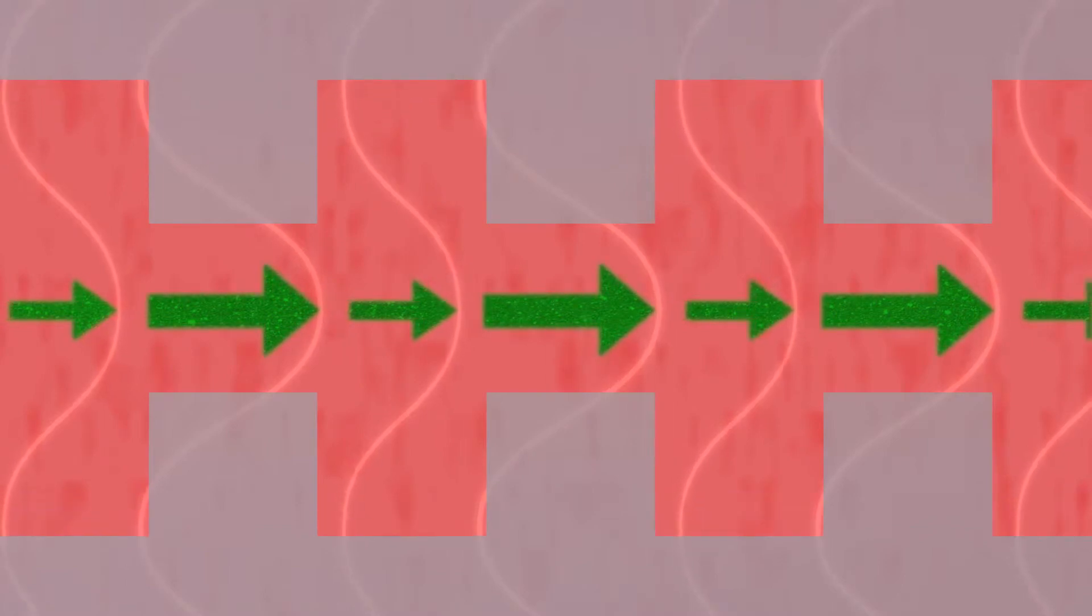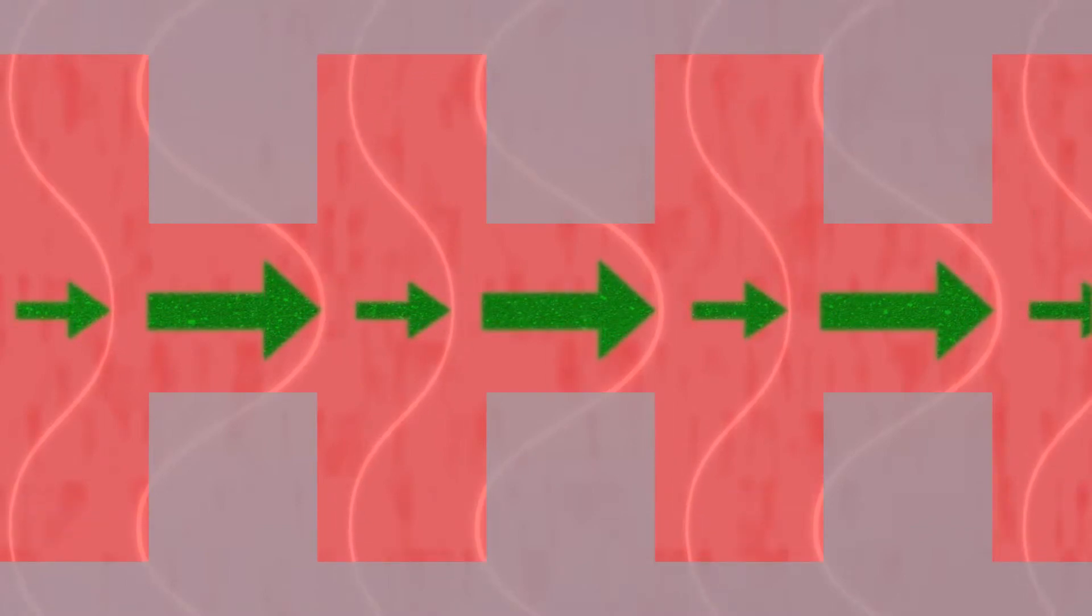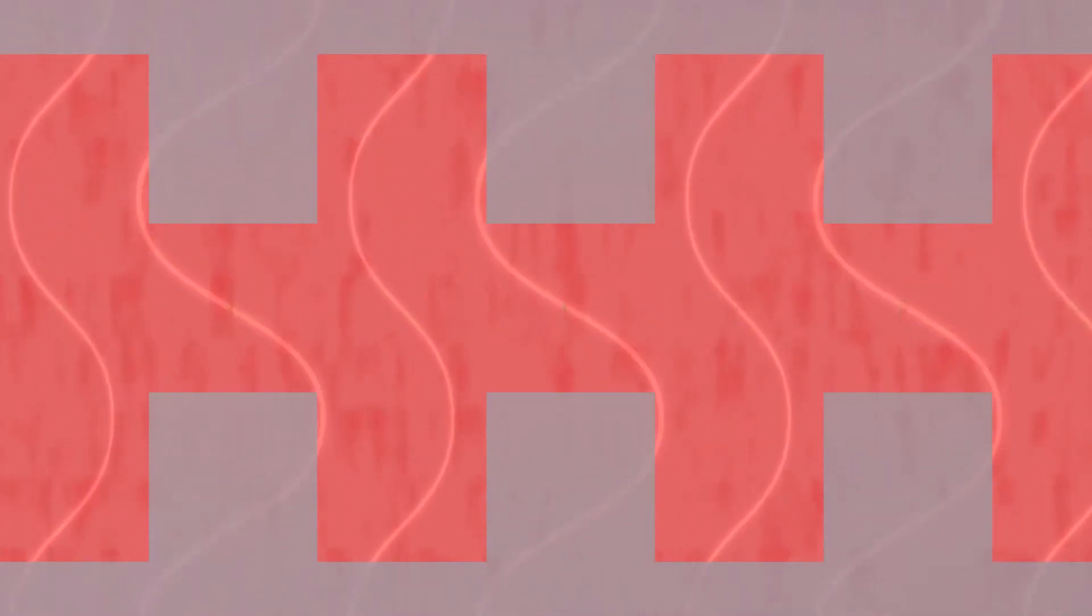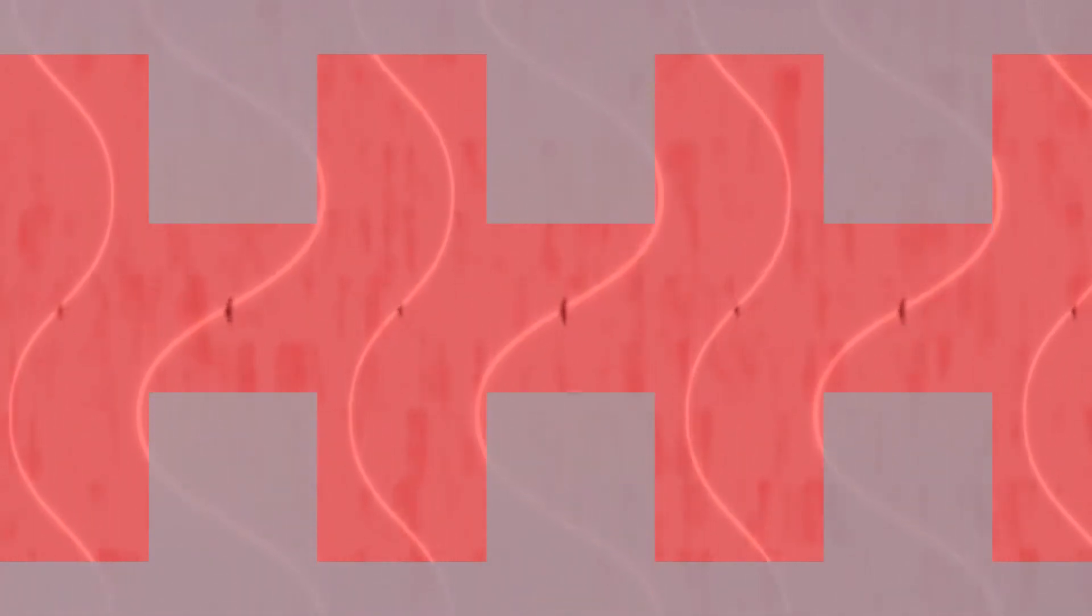We created a nanoscale pattern of ridges and gaps on the top and bottom of the channel. This structure increases the laser light's electric field between the ridges and reduces it within the gaps.